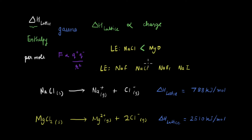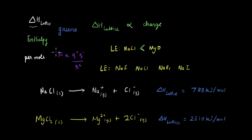Now comparing the lattice enthalpies of compounds like NaF, NaCl, NaBr, and NaI — since the magnitude of charge on each is the same, we look at the distance factor. Going down the column, ionic radii increases, so iodide has a much larger size than fluoride. The greater distance between sodium and iodide means a smaller electrostatic force, making the sodium iodide bond easier to break. Therefore lattice enthalpy is highest for NaF and decreases towards NaI — lattice enthalpy is inversely proportional to the size of the ion.